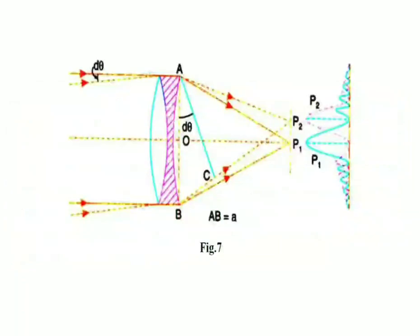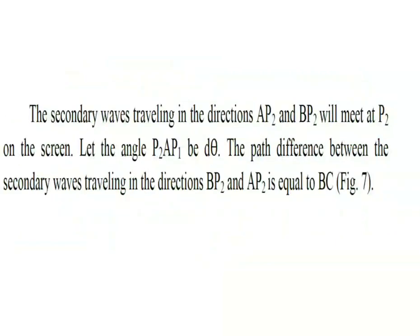This will be clearly discussed from this diagram. The light rays travel from A to P1, and these are the secondary wavelets coming from B to P1, and they all meet at point P1. The path travelled by the light from A to P1 is equal to the path travelled by the light rays from B to P1. That means there is no path difference between them. Whenever the path difference is zero, the position P1 indicates the central maxima. So P1 indicates the central maxima position for image 1. Now, what about the position of P2? The secondary waves travel in the direction AP2 and BP2, and will meet at a point P2 on the screen.